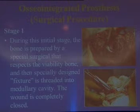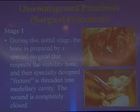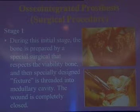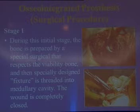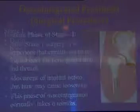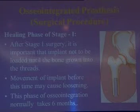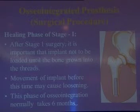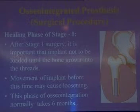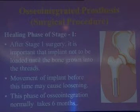This is the basic concept of osseointegration. It requires a surgical procedure, and there are two stages. In stage one, the bone is prepared by a special surgical technique that respects the viability of the bone, and then a specially designed fixture is threaded into the medullary cavity. The wound is then completely closed. During the healing phase after stage one, it is important that the implant not be loaded until bone grows into the threads. Movement of the implant before this time may cause loosening. This phase of osseointegration normally takes six months.